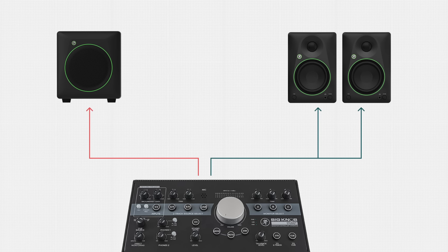Before moving on to monitor placement, let's quickly go over the setup for those of you who are using a subwoofer. One way is to use a third output from your audio interface dedicated to the subwoofer — connect the third output to the input of the subwoofer, and follow the previous setup for the main monitors. However, getting this to work properly is a bit more advanced because you'll need to do some routing within your audio interface and playback engine to make sure that the right signals reach the subwoofer at the right levels.